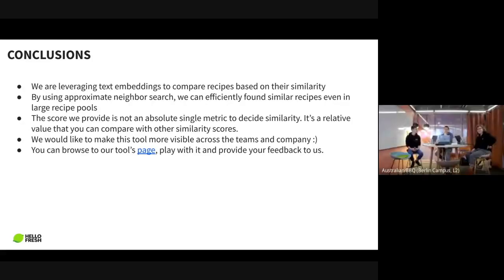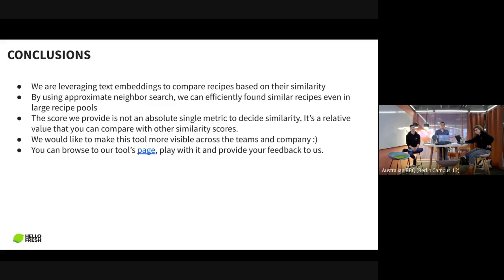To conclude: we are leveraging text embeddings to compare recipes based on similarity, and using approximate nearest neighbor search we can easily search large recipe pools to find similar recipes. One important point — the score we provide is not an absolute decision point. It is a relative value: if two pairs have different recipe similarity scores and one is bigger, we can say the first two recipes are more similar than the second pair. It's a soft metric, not a decisive metric.